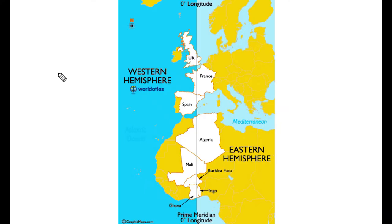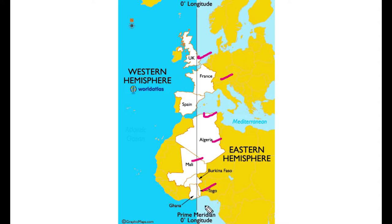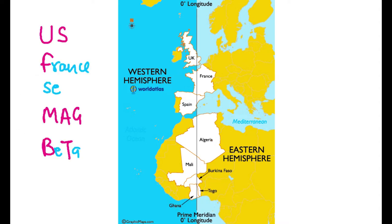Namaskar friends. In this video we'll try to learn about the countries through which the 0 degree latitude or prime meridian passes. These are the countries: UK, France, Spain, Algeria, Mali, Burkina Faso, Togo, and Ghana. There are eight countries total.